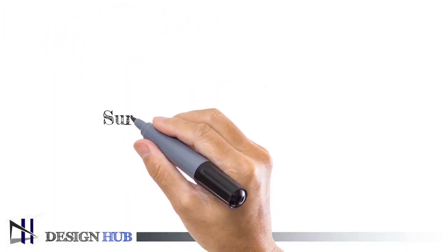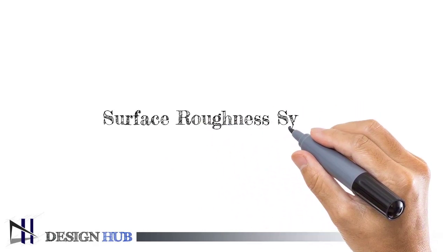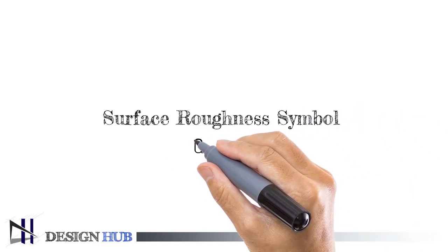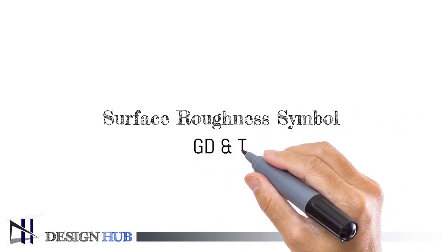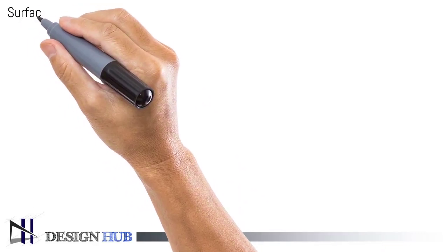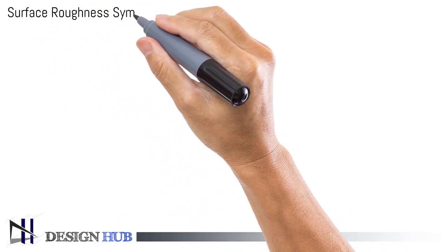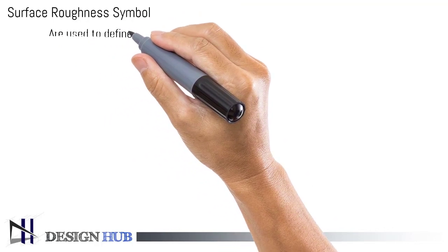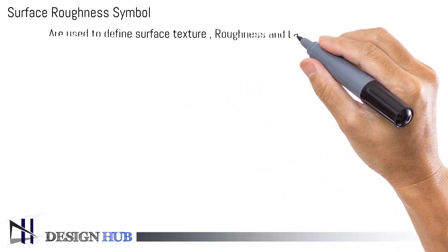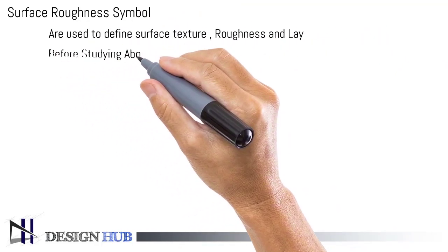Welcome to Design Hub. This video is about geometric dimensioning and tolerancing. We will learn about surface finish symbols and roughness terminology that will help you understand roughness symbols in technical machining drawings. Roughness symbols are used to define surface texture, roughness, lay direction, machining type, etc.